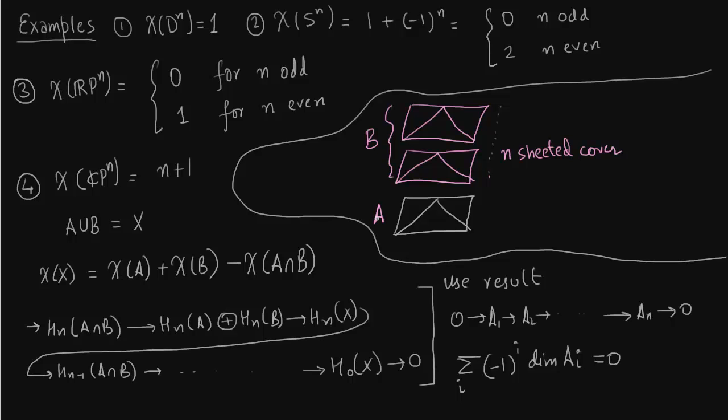So let us say this space is B, the covering space and the base space is A. So the number of simplices in B is precisely n times the number of simplices in A. And therefore, Euler characteristic of B is n times Euler characteristic of A. It is just you just add up over all the homology groups which are associated with the simplices. And that is pretty much it.